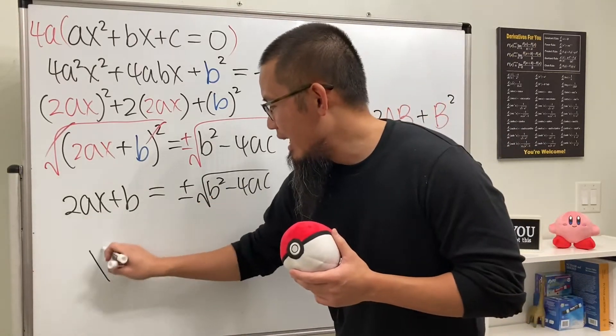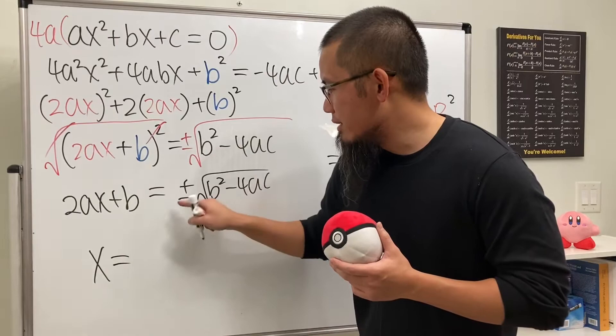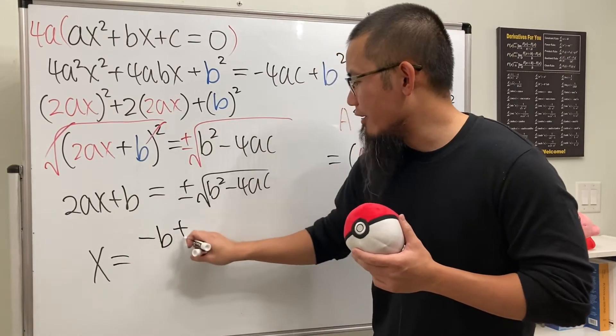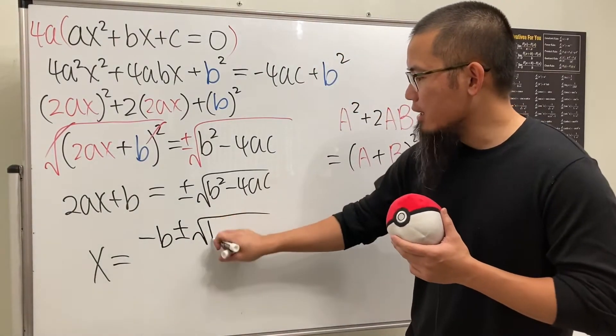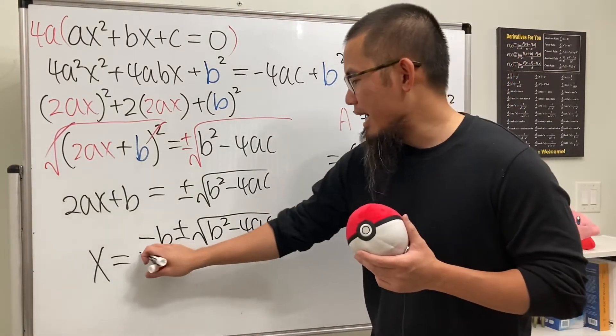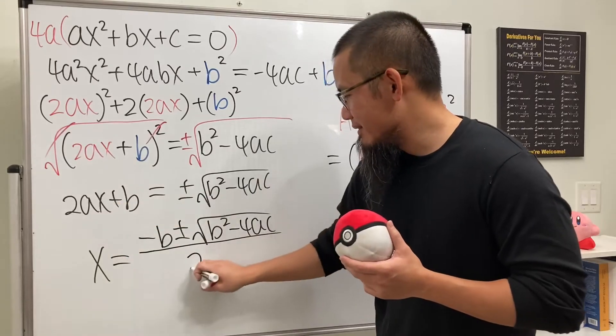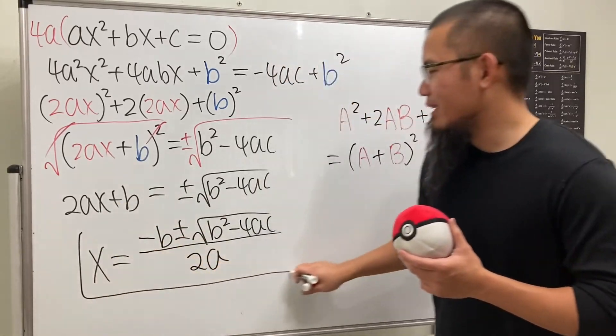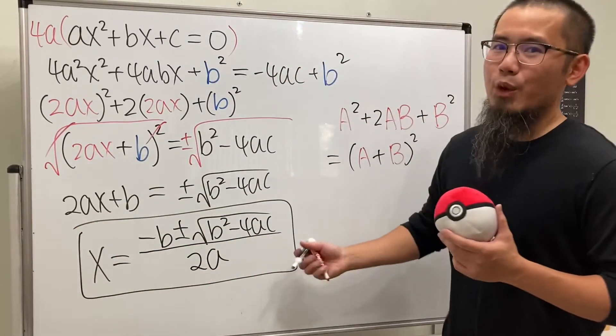Ladies and gentlemen, x is just equal to—bring this to here, we get negative b, and then we have the plus or minus that part, square root of b² minus 4ac, all divided by 2a. Aha! This is indeed the quadratic formula.